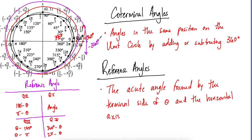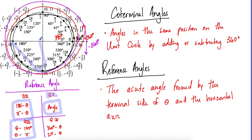Reference angles are the acute angle formed by the terminal side and the horizontal. In Quadrant I, the angle is its own reference angle. In Quadrant II, do 180 minus the angle (or π minus the angle in radians). In Quadrant III, do angle minus 180 (or angle minus π). In Quadrant IV, do 360 minus the angle (or 2π minus the angle).